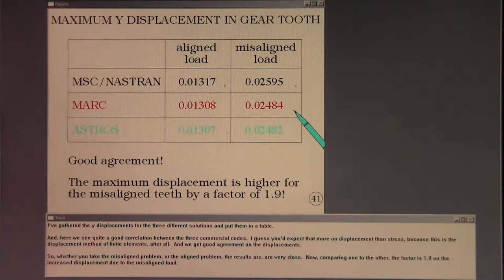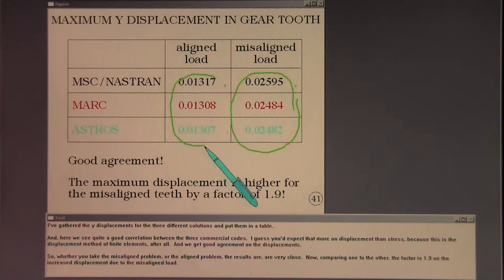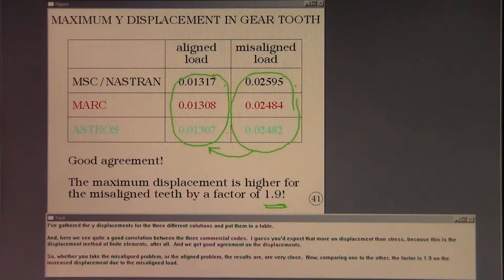So whether you take the misaligned problem or the aligned problem, the results are very close. Now comparing one to the other, the factor is 1.9 on the increased displacement due to the misaligned load.